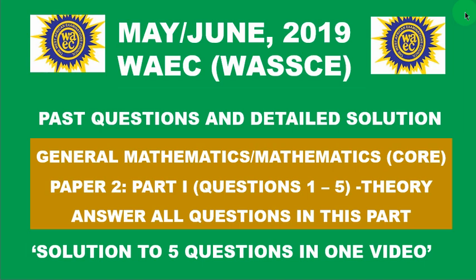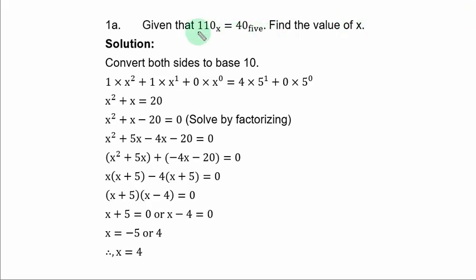Question 1a: Given that 110 base S equals 40 base 5, find the value of S. What you do here is to simply compare both numbers to base 10, the common base. And to do that, you multiply each digit by the respective base number and you assign the position of each digit to the base. For the first number, 0 the position is 0, 1 is 1, and the other 1 is 2. For 40, 0 is 0, then 4 is 1.